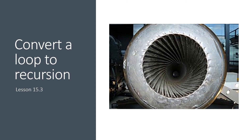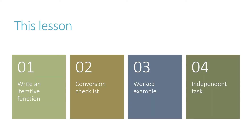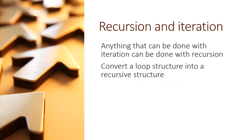Welcome to lesson 3 of week 15. This week we'll look at how to convert a loop function to a recursive function. We'll write an iterative function and then go through a conversion checklist and turn that iterative function into a recursive function. And I'll leave you with an independent task to do on your own. Remember that any task that can be completed using iteration can also be done using recursion — we can always convert a loop structure into a recursive structure. In this lesson we'll see how.